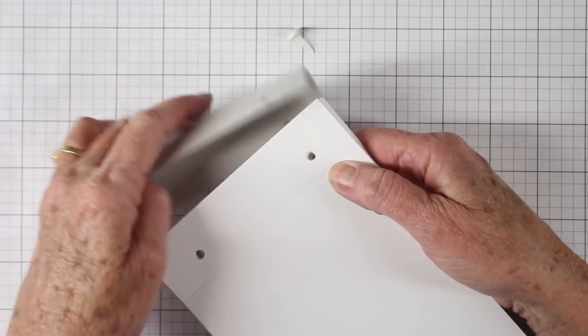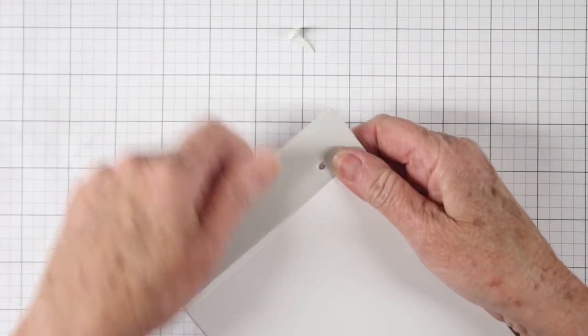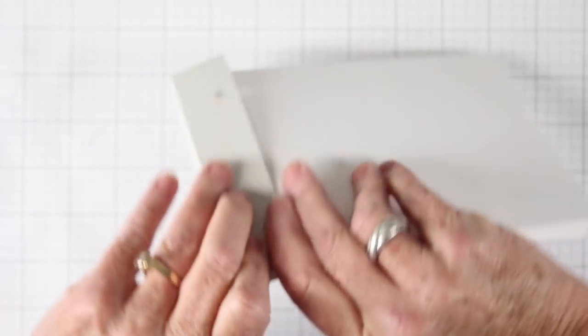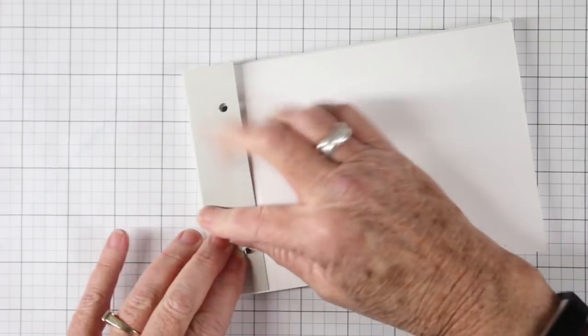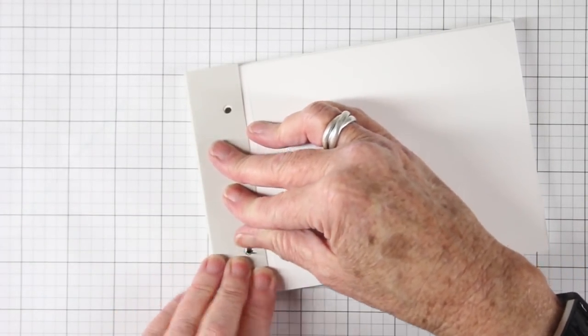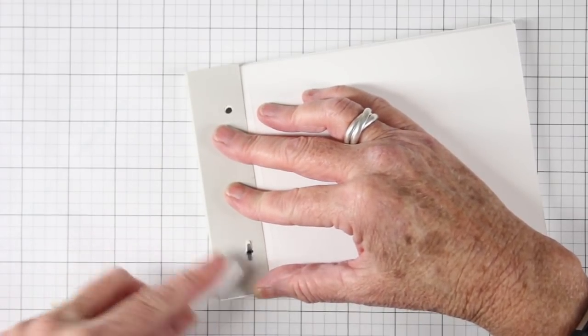To bind my book together I am using some brads that I have from my old stash and I can just place these right through the holes once I have everything lined up. And then I will open up the brad endings from the back side. I want to twist these actually so that they go side to side and open those up and use my bone folder to press those flat.